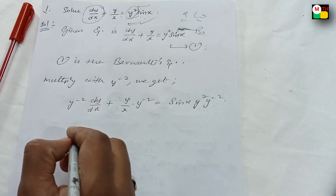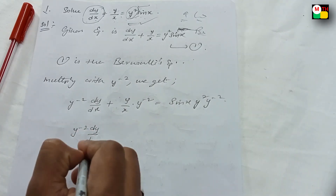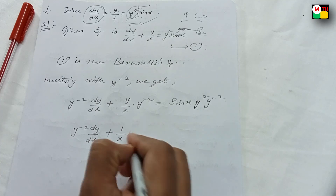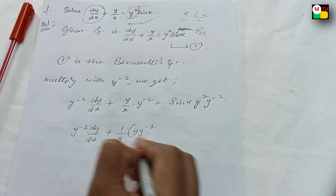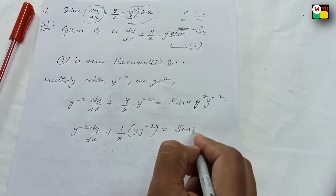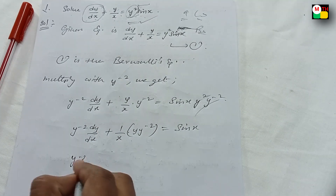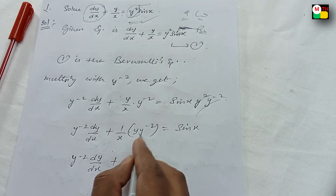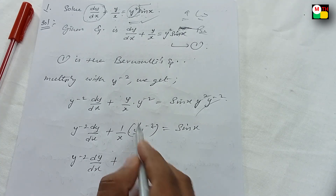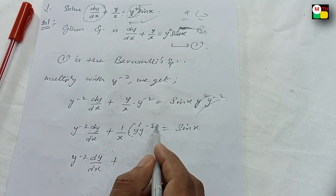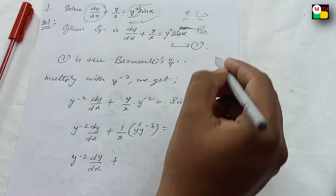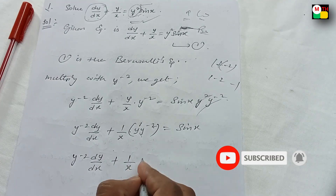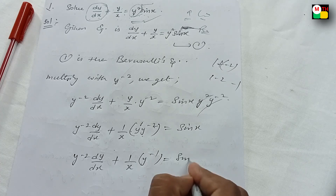Next time, you have to do it — you can observe it. This is y power minus 2 times dy/dx plus y power minus 2. This is 1/x times y times y power minus 2. Next: y power minus 2 plus y power minus 2 — y times y power minus 2 is a power 1 times a power minus 2, using a^m times a^n. And 1 plus minus 2 is a power minus 1. So 1/x times y power minus 1 is equal to sin x.